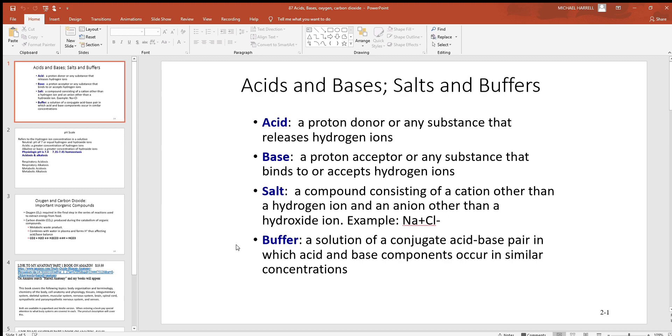Also, down here at the bottom we see buffer: a solution of a conjugate acid-base pair in which acid and base components occur in similar concentrations. So buffers tend to be on the pH scale right at around a seven. That's what's considered neutral on that scale. The pH scale goes from zero to fourteen. So you got this zero to fourteen range; seven's right in the center.